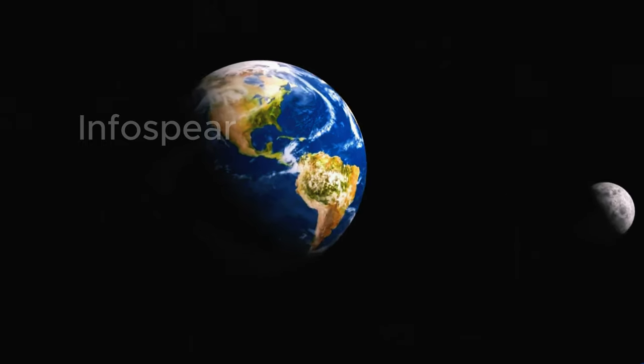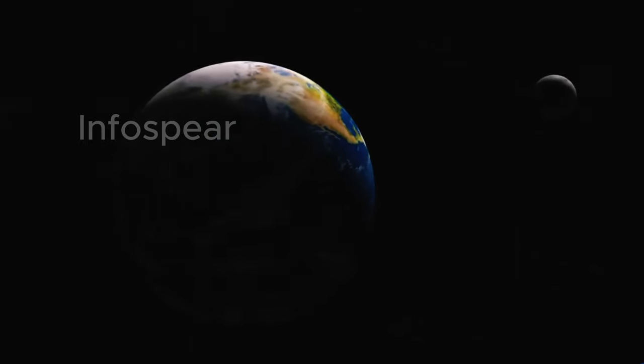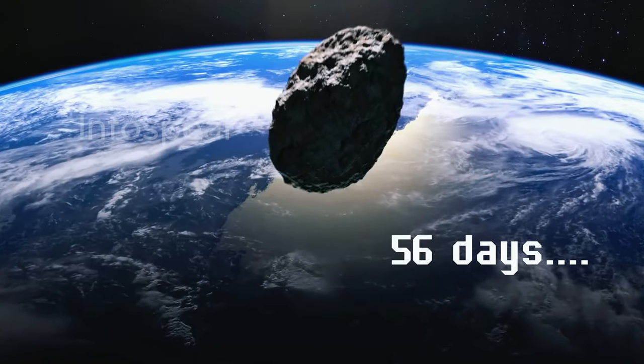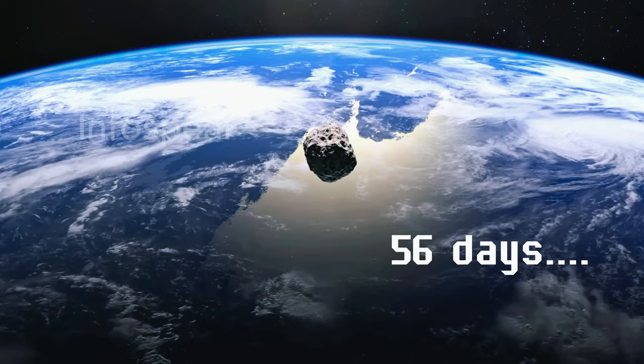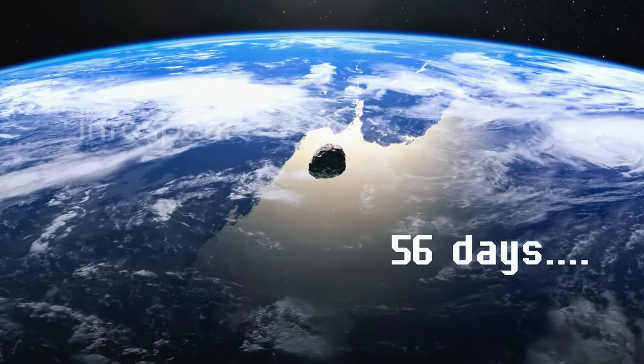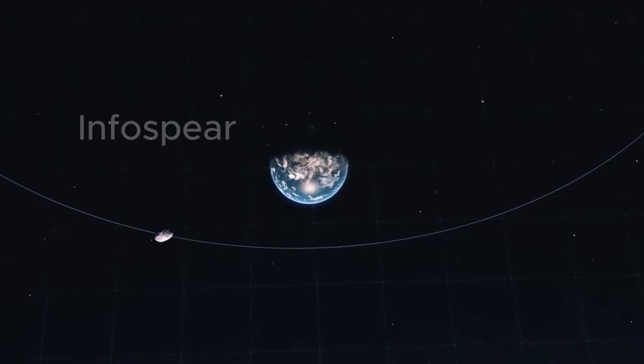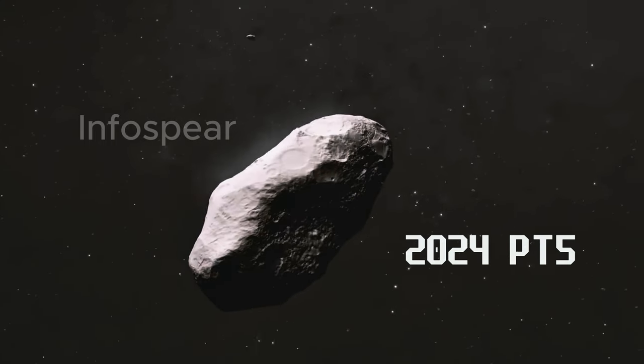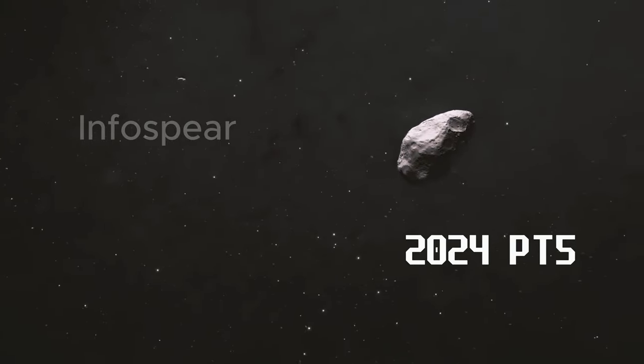What if I told you Earth is about to get a new moon, and no, it's not the one you're imagining right now. For a brief, incredible 56 days, our planet will gain a temporary companion in the sky, a tiny, elusive traveler that's caught in Earth's gravitational embrace. Introducing asteroid 2024 PT5, Earth's newest cosmic partner.